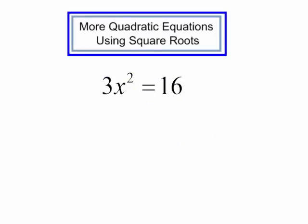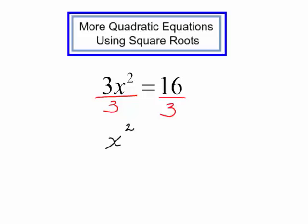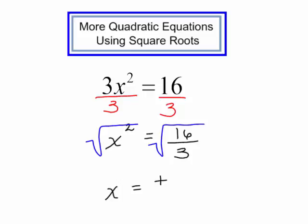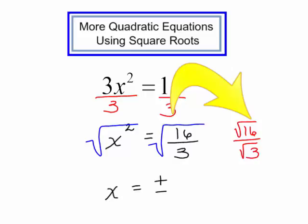3x squared equals 16. This is a quadratic equation — I see my squared term, and I do not have a variable to the first. So I will use the square root property. Isolate your squared term: it is being multiplied by 3, so the opposite is to divide by 3. x squared equals 16 over 3. I can now take the square root of both sides. x will equal plus or minus the square root of 16 over the square root of 3. The square root of 16 is 4, so this will be 4 over the square root of 3.